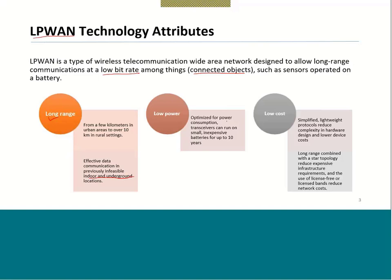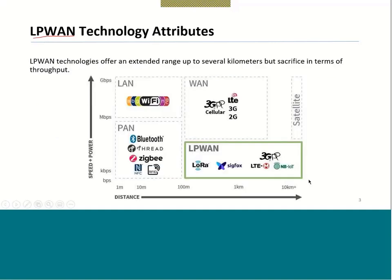Low power is another key attribute: transceivers can run on small, inexpensive batteries for up to 10 years — very important. Low cost is also critical: simplified lightweight protocols reduce complexity in hardware design and lower device cost. Long range combined with star topology reduces infrastructure requirements. And the use of license-free bands reduces network cost significantly — unlike cellular networks that operate in licensed spectrum and therefore cost more.